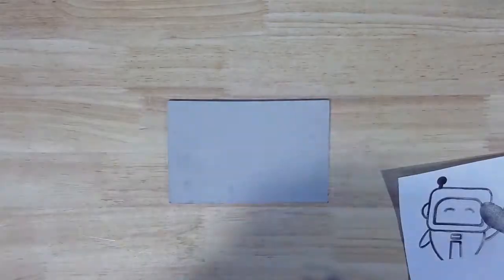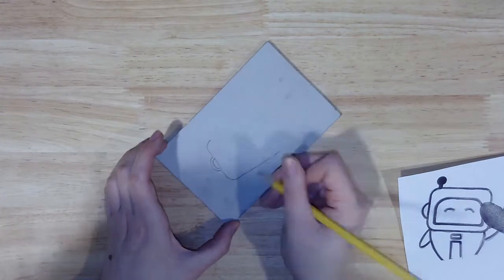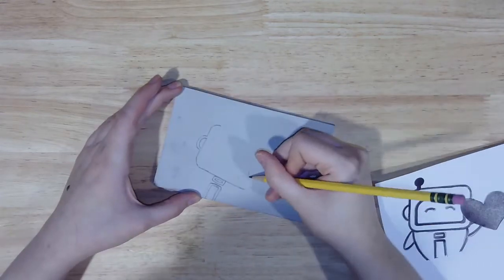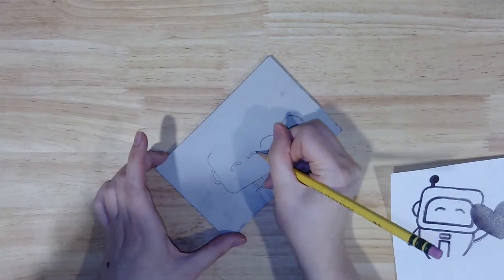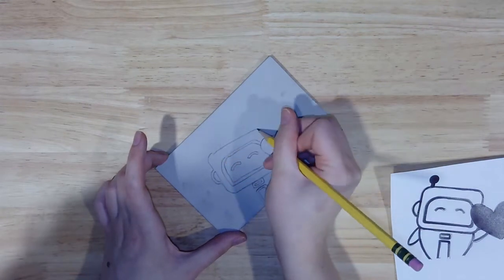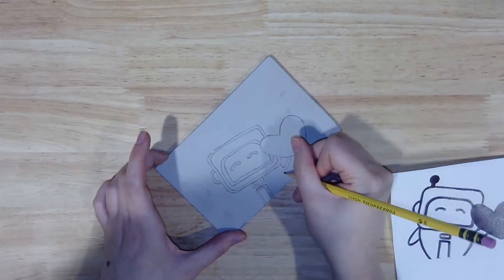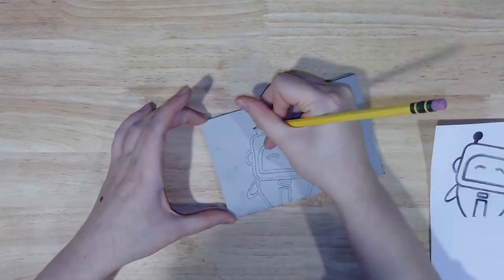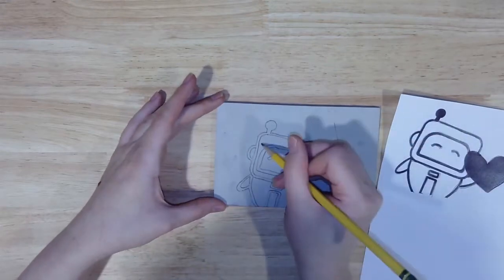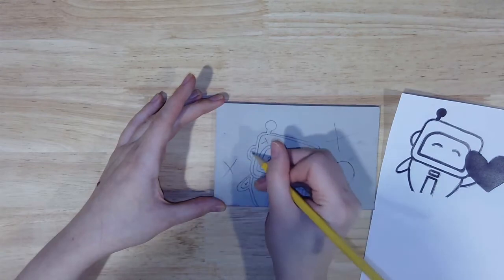It might be difficult to see on this camera, but the design did transfer. To make it easier to see, I like to trace over it again with a pencil. Next, use your sketch to clearly mark the white spaces in your design on your printing block. This is what we'll be carving away.